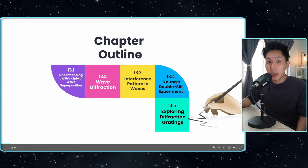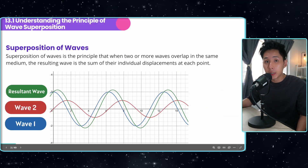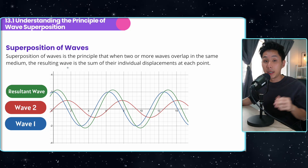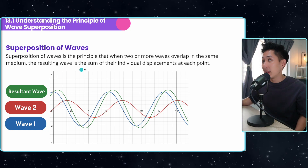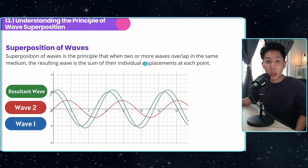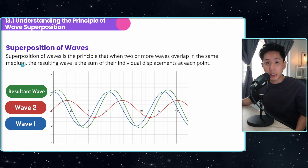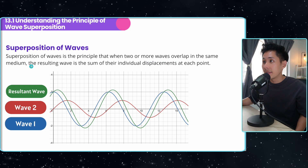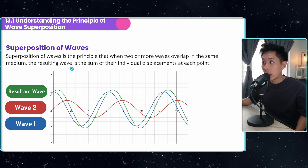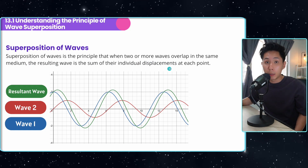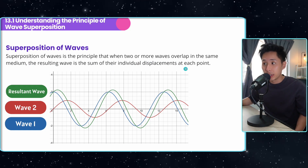This is the chapter outline. First, what is superposition of waves? It is a principle where two or more waves overlap in the same medium, and the resulting wave is the sum of the individual displacements at each point.